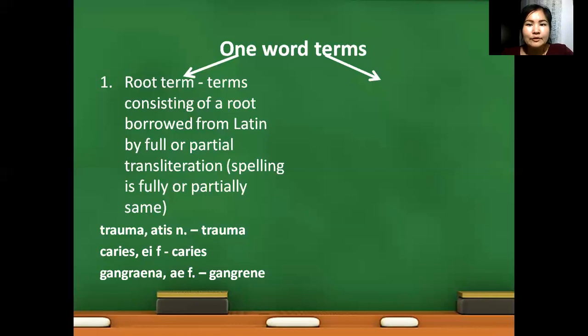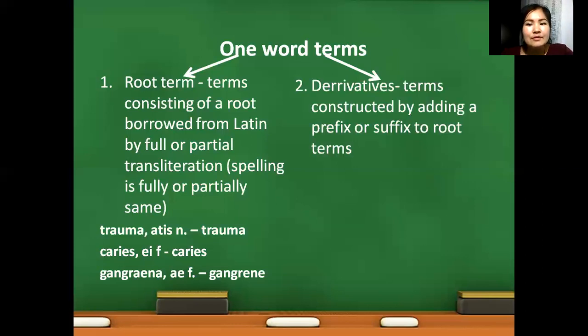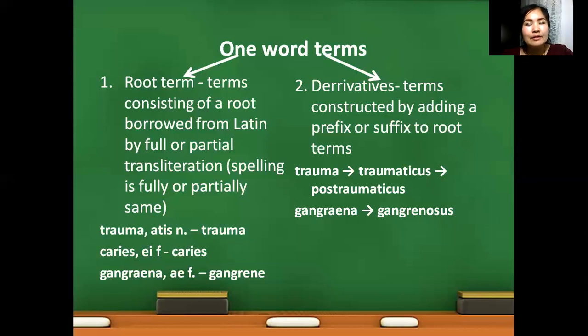The second type of one word terms are derivatives. Terms constructed by adding prefix or suffix to root terms. Look at the example: trauma is a root term, and by adding suffix and prefix to this root term we get two new derivative terms like traumaticus and post-traumaticus. Gangrena, root term. Derivative will be gangrenosus.